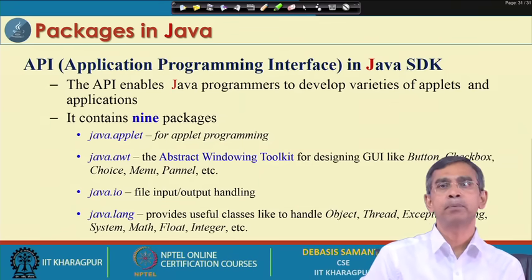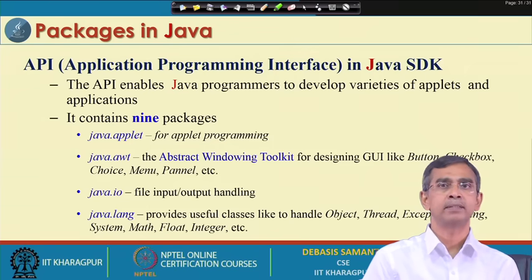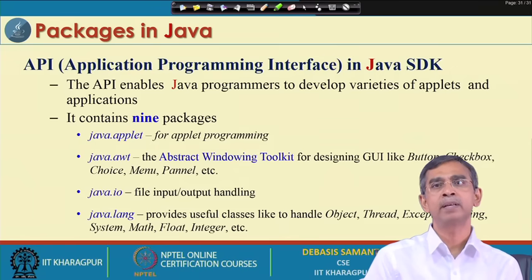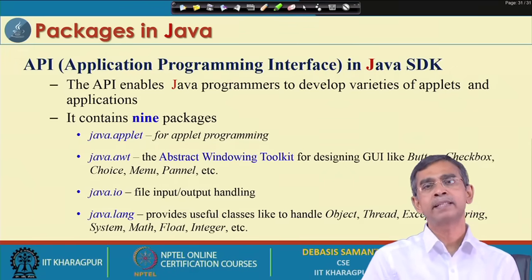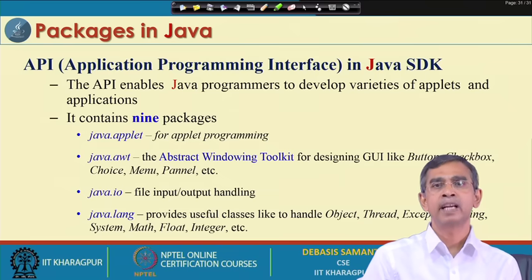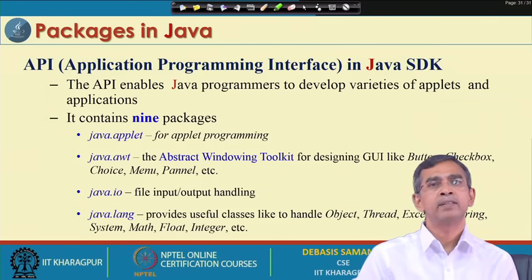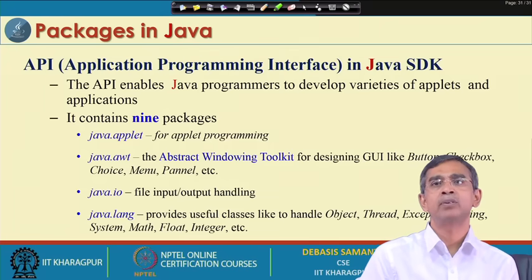For example, there is one package called java.applet. This package is suitable for writing applets — for programming with graphical user interfaces. As I already mentioned, applets are for designing graphical user interfaces such as buttons, checkboxes, scroll windows, and text fill areas. The applet package helps you create a graphical user interface very easily without knowing the details of how it works — just like magic.